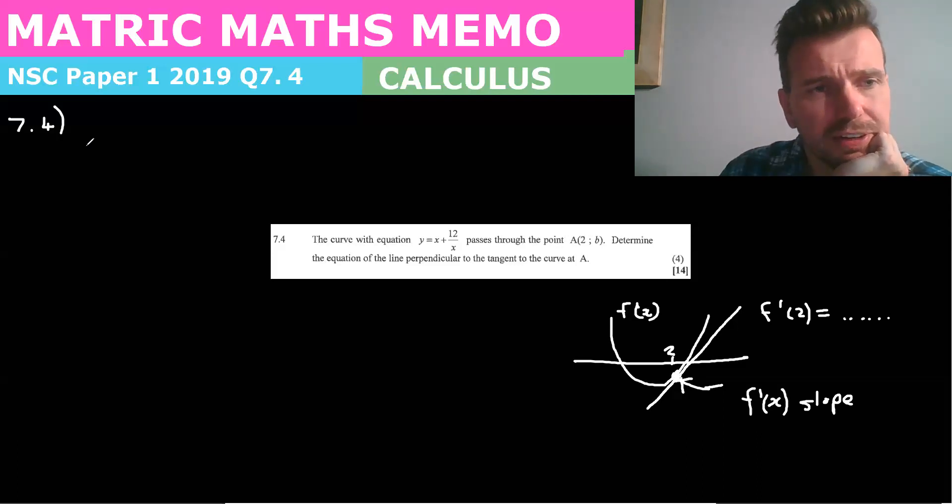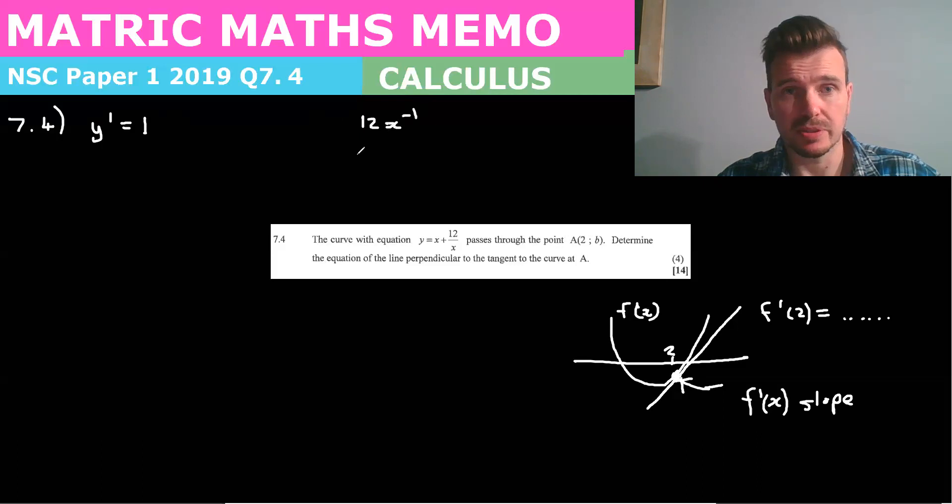So when in doubt, find the derivative. y' is equal to the derivative of x is just one, and the other one is 12x^(-1), so x^(-1), which is just -12x^(-2). -1 times 12 is -12, -1 minus 1 is -2.